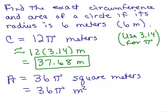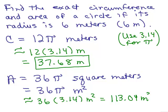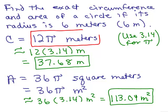Let's do the same thing for the area. Let's approximate it, so this is approximately 36 times 3.14 square meters, which actually equals 113.04 square meters. So in green I have the approximation, and in red I have the exact answers.